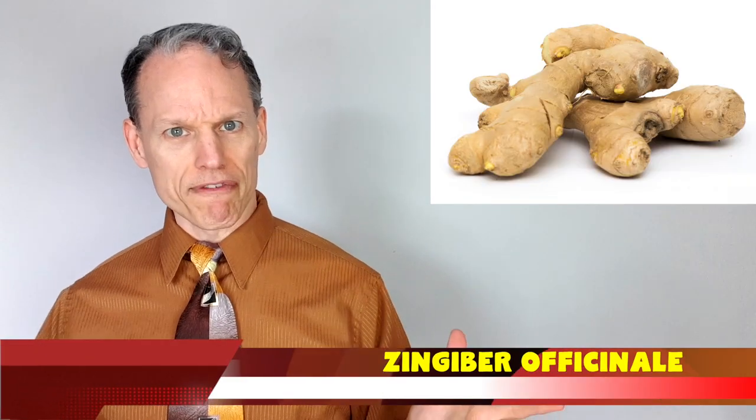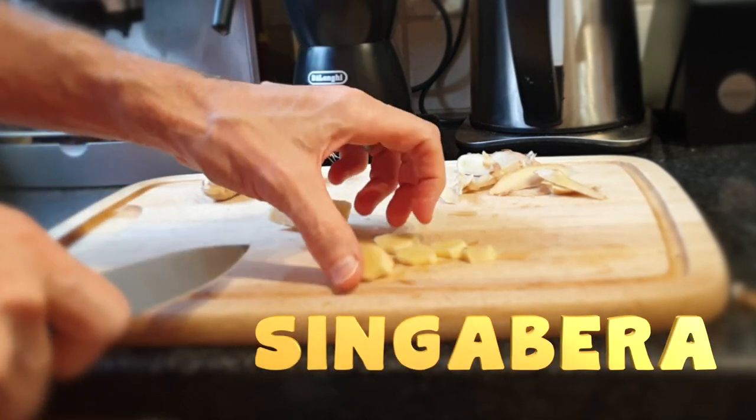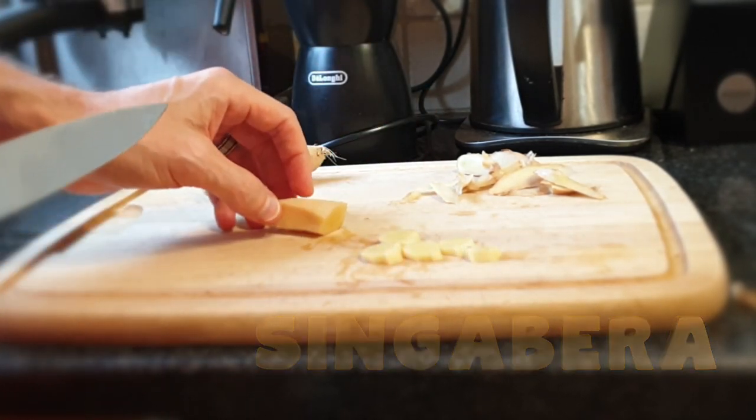Now, ginger root, as we know it, comes from the flowering plant of the same name. It even has a cool scientific name, Zingiber officinale. Sounds exotic and mysterious, no? The word ginger is believed to have come from the ancient Sanskrit singaberra, which means shaped like a horn.